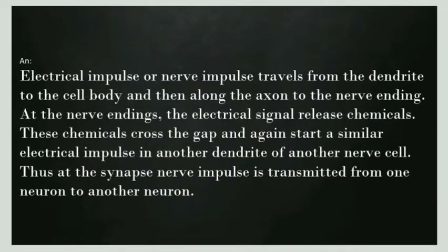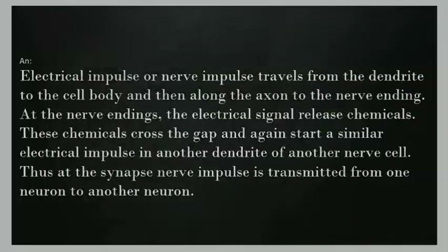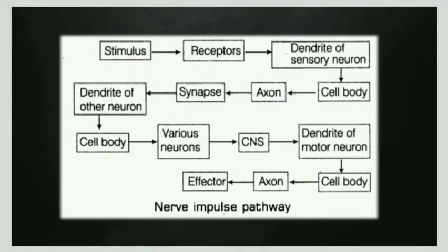An electrical impulse, or nerve impulse, travels from the dendrite to the cell body, and then along the axon to the nerve ending. At the nerve endings, the electrical signals release chemicals. These chemicals cross the gap and again start a similar electrical impulse in another dendrite of another nerve cell. Thus, at the synapse, a nerve impulse is transmitted from one neuron to another. This is the pathway of the nerve impulse.